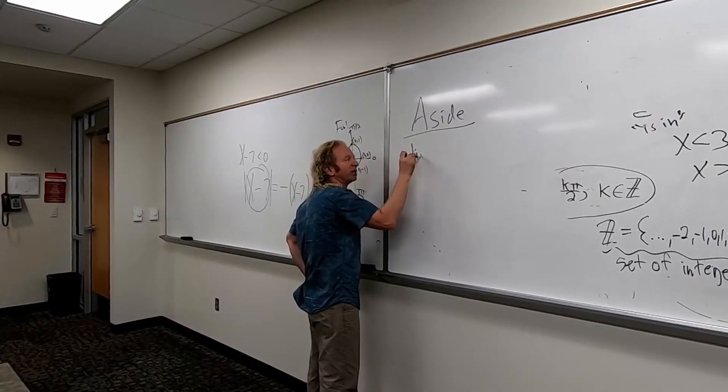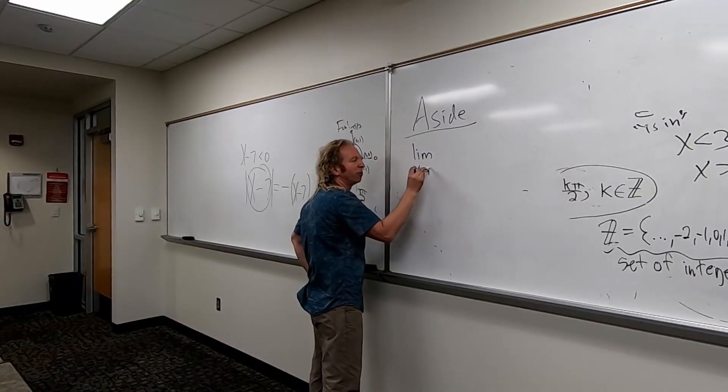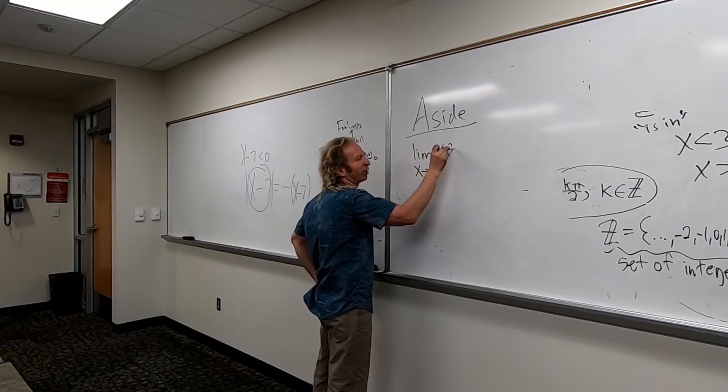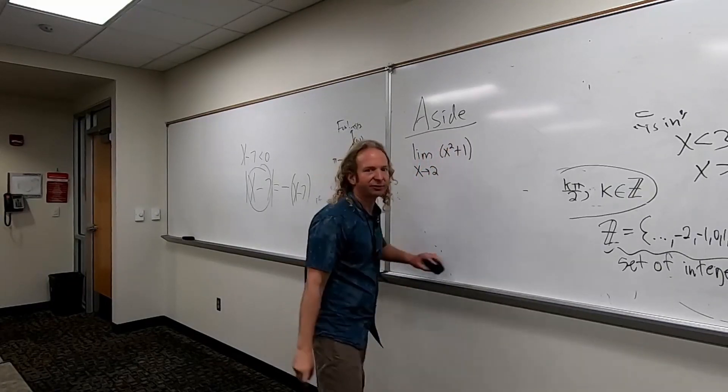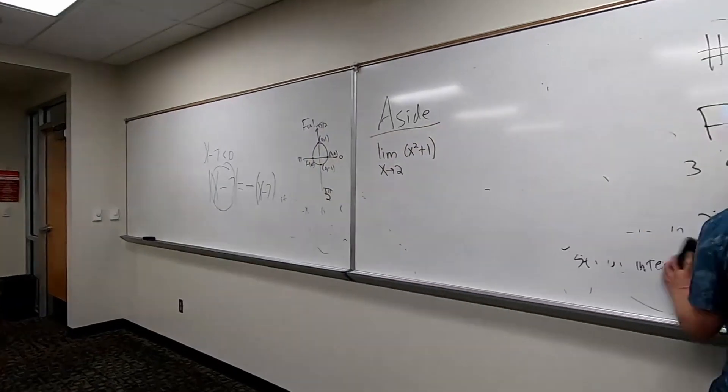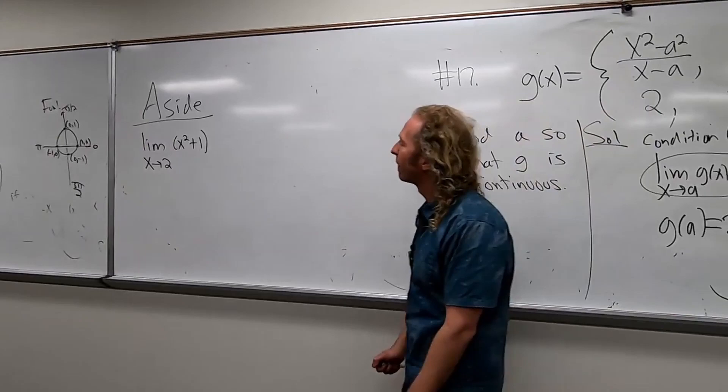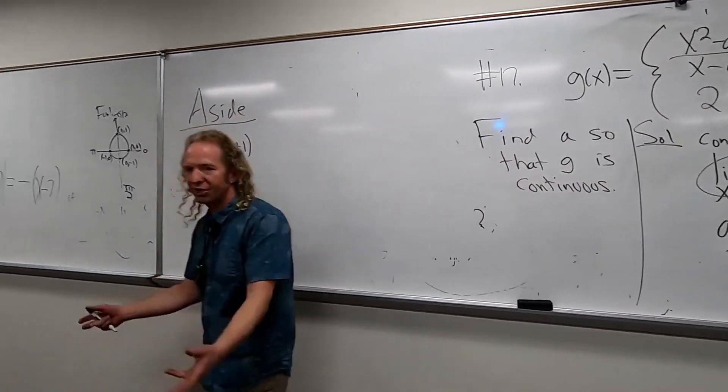Say we have, let's go really easy, limit as x approaches 2 of x squared plus 1. Okay, so let's just take this limit.